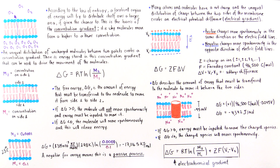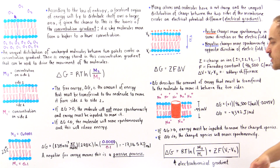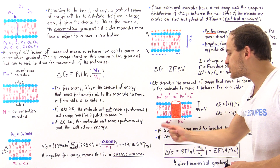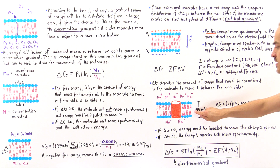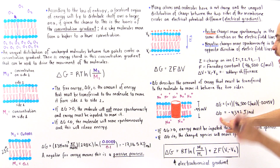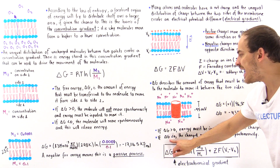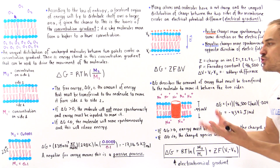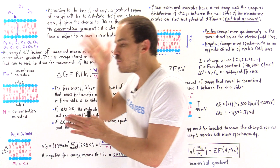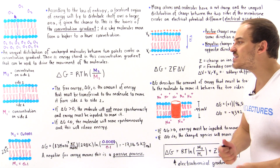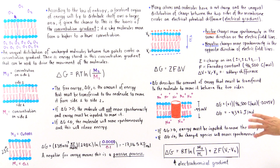If delta G is positive, energy must be inputted to actually move the charged species across that particular cell membrane. If instead we wanted to move sodium from the inside to the outside, delta V would have been positive, and delta G would have been positive. But because our delta G is negative, no energy must be inputted into that molecule — this will be passive transport, not active transport.